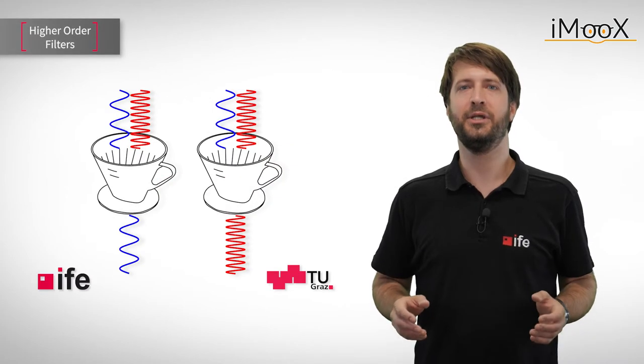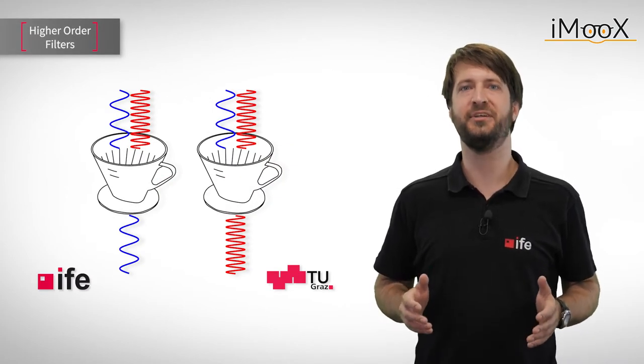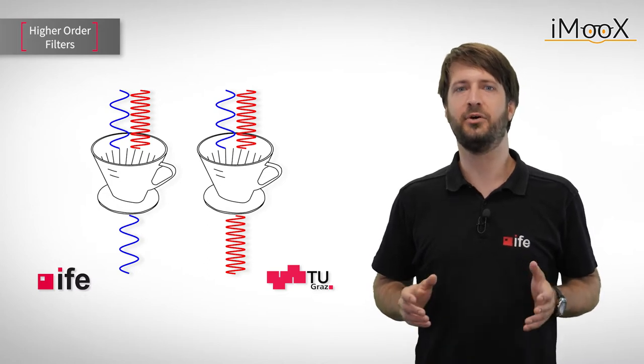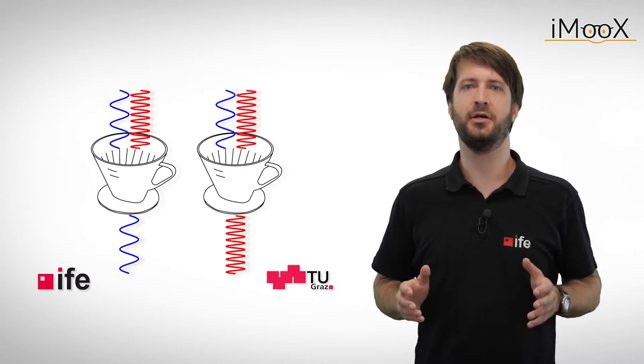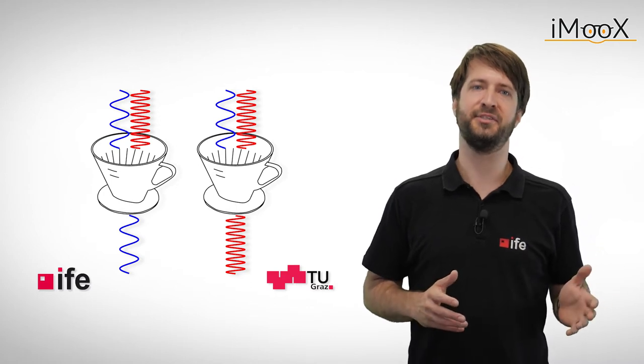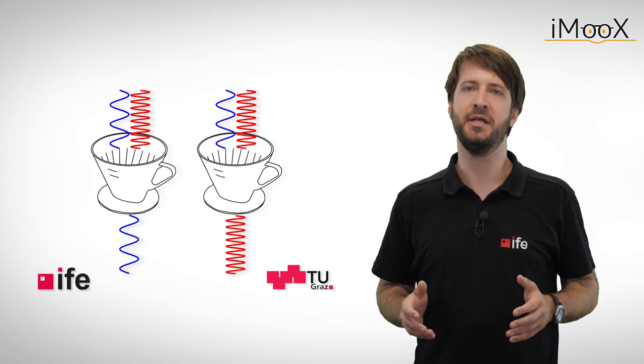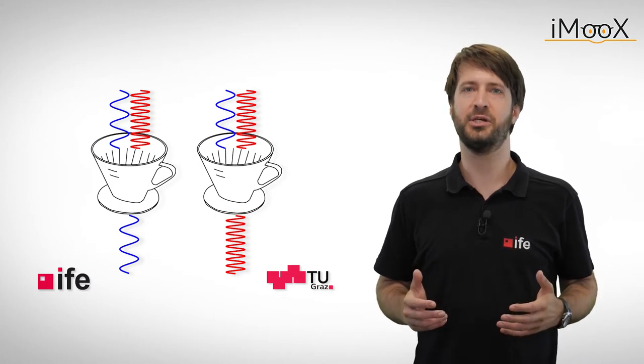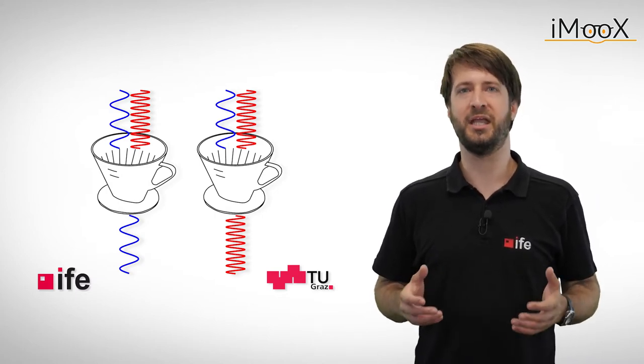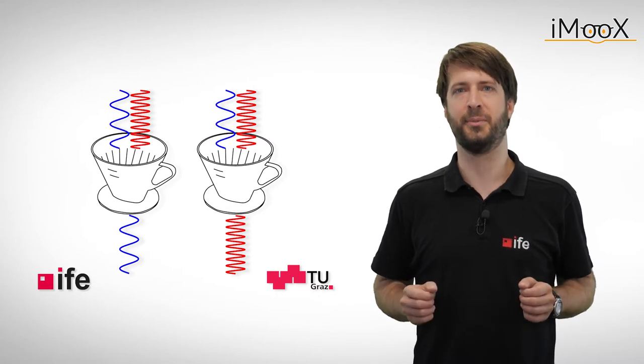In this video we again want to focus on passive filters only. We already know the simplest type of those circuits, consisting of a single capacitor and a resistor. The capacitor is often used for passive filter circuits because it is easy to manufacture, costs little money and behaves quite predictable. So let's stick with it for the moment.